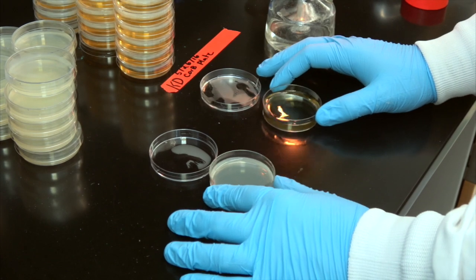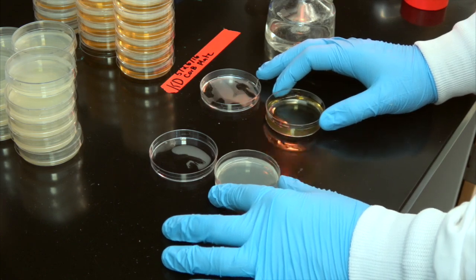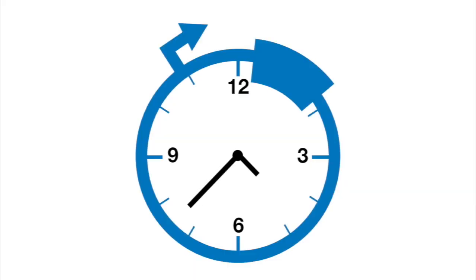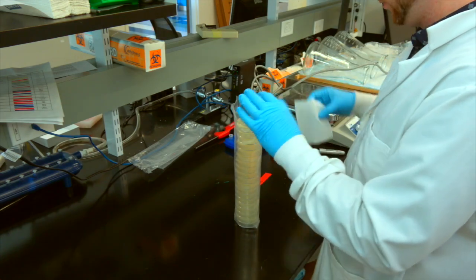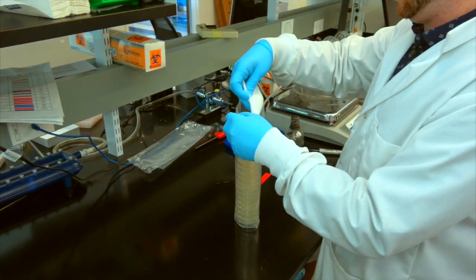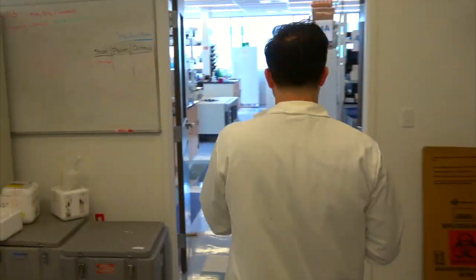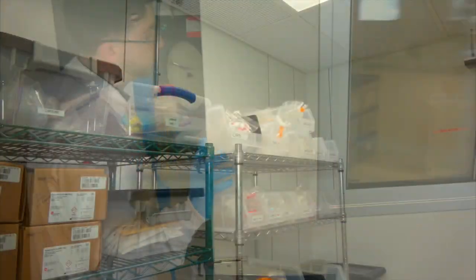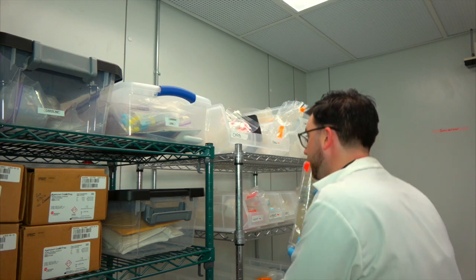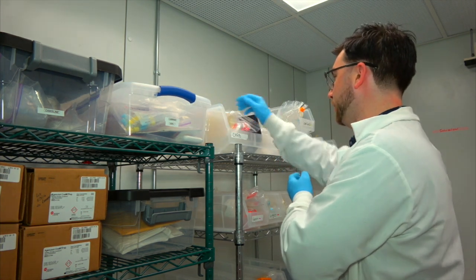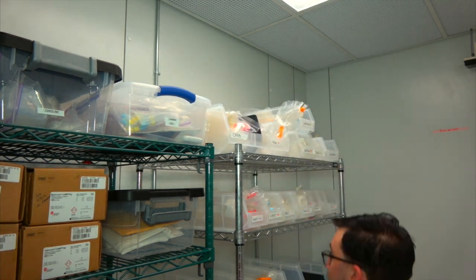It takes roughly 30 minutes for our plates to solidify at room temperature. However, we leave them out overnight to allow them to dry. Once dry, we place the plates in a plastic bag with an absorbent material to reduce condensation. For long-term storage, we keep our plates in the cold room at 4 degrees Celsius. Even when stored at this temperature, plates should always be checked for contamination prior to use and should never be stored for more than a month.